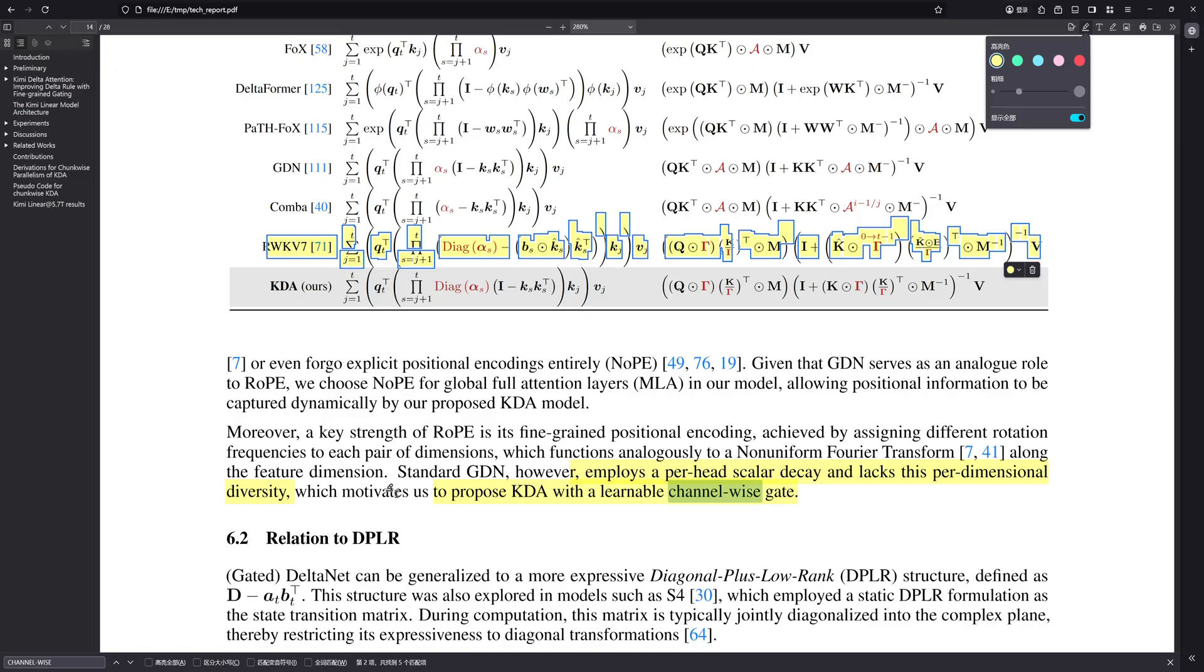Which is interesting because it gets around the strict orthogonality constraints you see in things like rope. By making the KDA layers responsible for handling recency bias, the architecture actually lets the full attention MLA layers operate without any position encoding or no PE as they call it. The MLA layers can just focus on semantic content. This division of labor, the structural delegation, to me proves KDA is handling a job encoding position and recency over potentially vast spans that linear models traditionally struggled with. And it does it well enough to take that burden off the MLA layers. That feels like an intrinsic functional breakthrough.